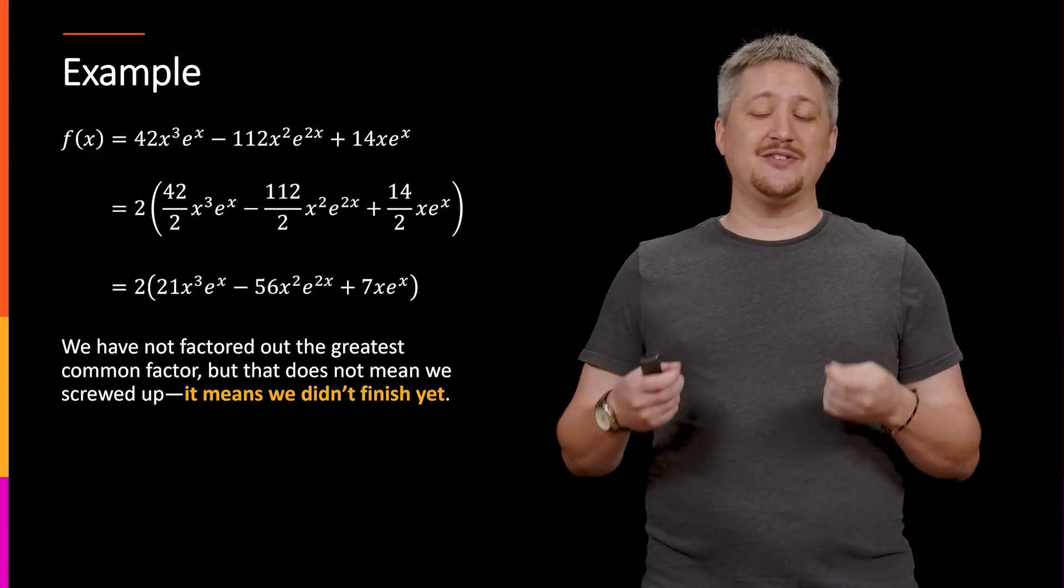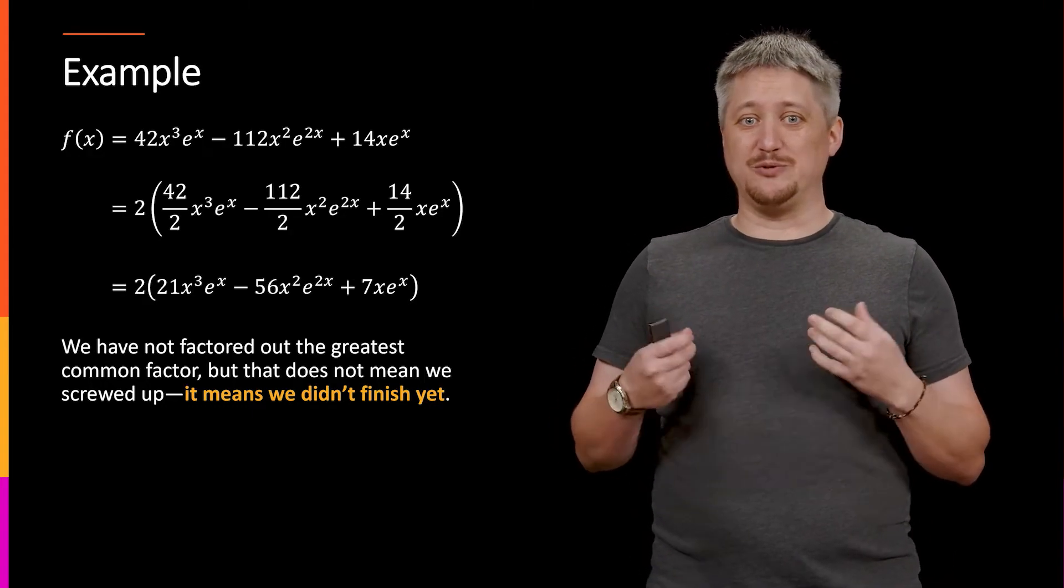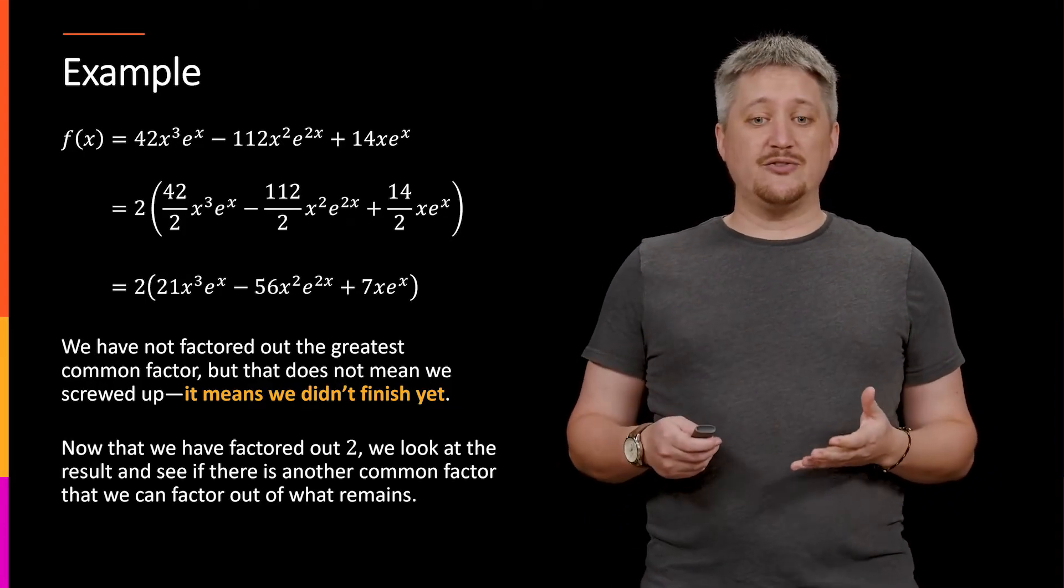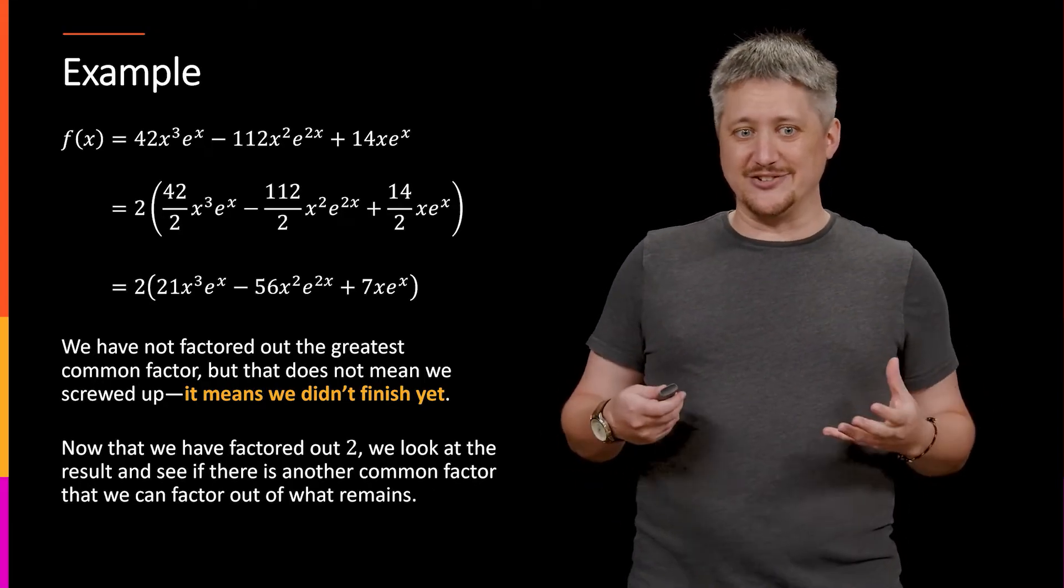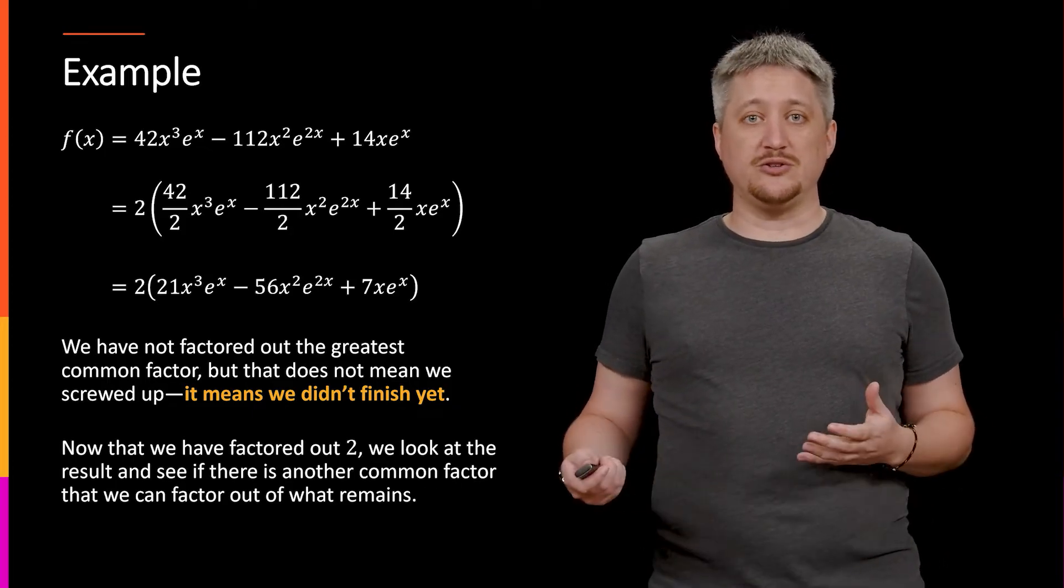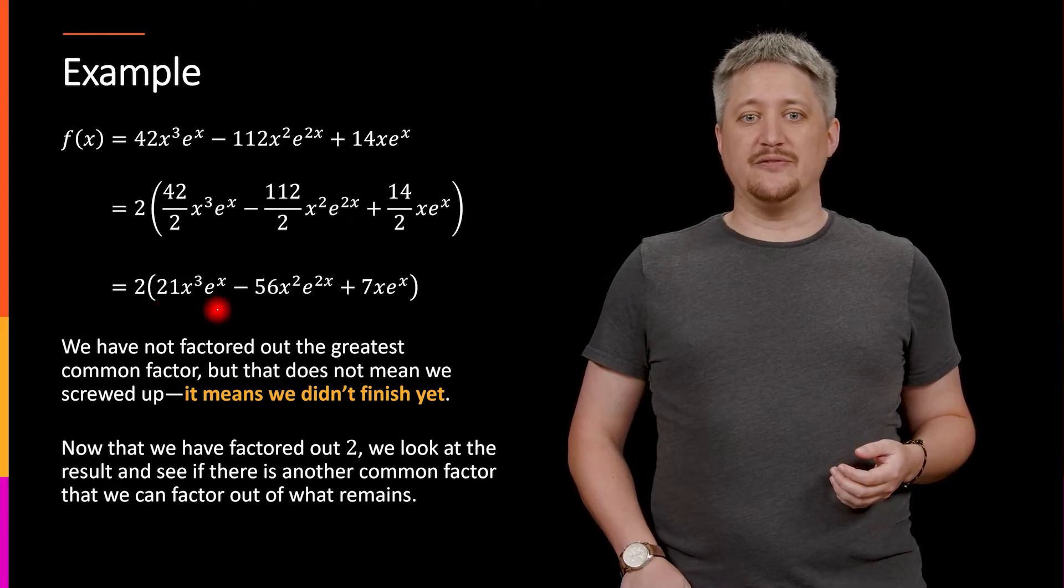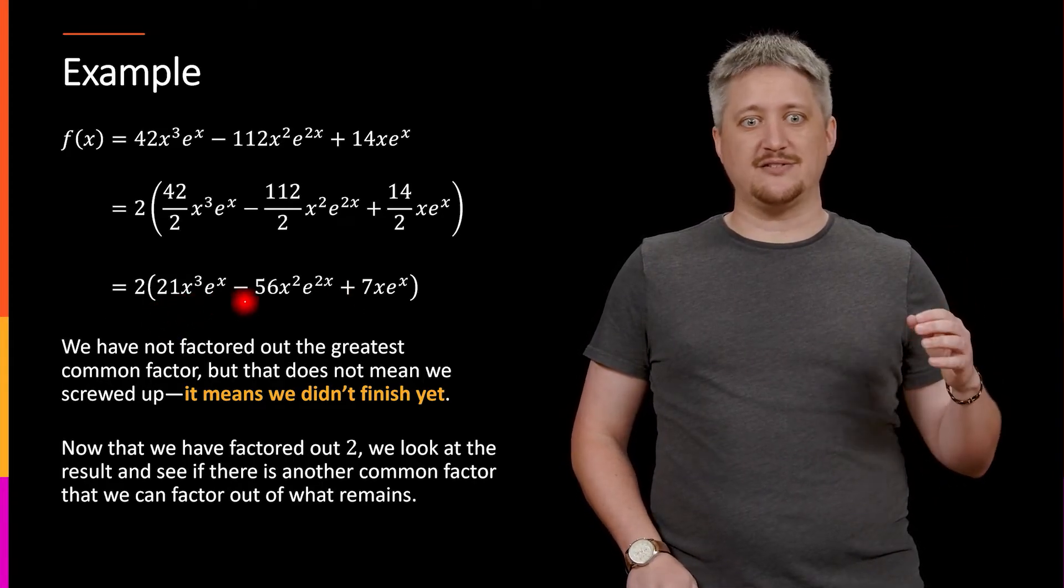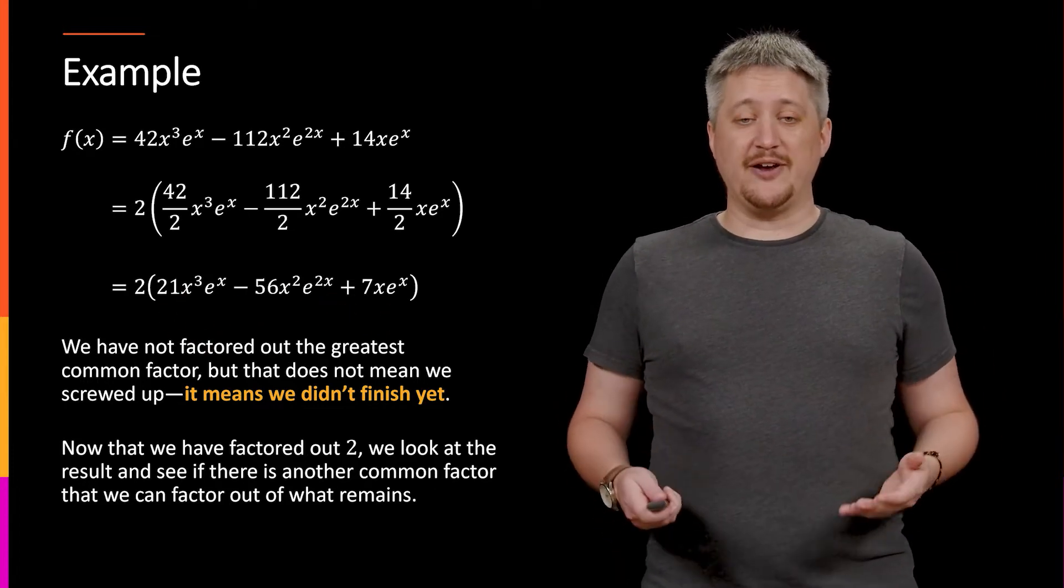And doing this in multiple steps is typically the best way to not make mistakes when you're doing this with really complicated expressions. So now that we factored out 2 we look at the resulting piece that's still inside and we see if there's any other common factor in there that we could factor out. So looking at this 2 times all of this stuff, I'm looking at the inside bit, the 21x³e^x blah blah blah, that little inside bit, and I want to see what is a common factor.